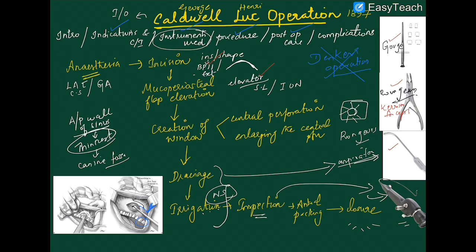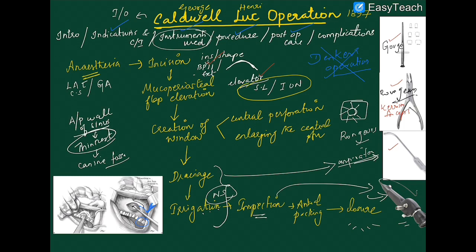Now for complications, which can be derived from the procedure itself. First, accidental injury to the branches of the infraorbital nerve while elevating the mucoperiosteal flap. Second, hemorrhage or epistaxis — bleeding through the nose. Third, cutting the innervations to the canine tooth or adjacent teeth, leading to post-operative discoloration or non-vitality of teeth. Fourth, if the antrum is not properly irrigated or drained, recurrence of the lesion can occur.